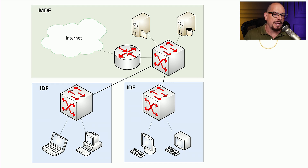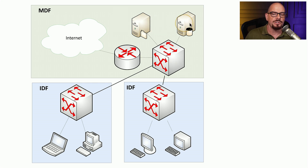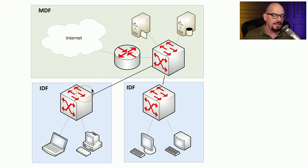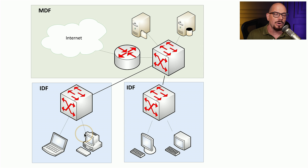Here's a view of what that would look like, where you have the MDF — maybe this is where our internet connection comes in, there might be a core router and a core switch, and you might even have file servers and database servers in the MDF. Maybe on different floors of the building you would then have individual IDFs. In this case there are two, but there might be more. In the IDF, you might be connecting users on the floor to a central switch in the IDF, and that switch is connecting back to the main core switch in the MDF.